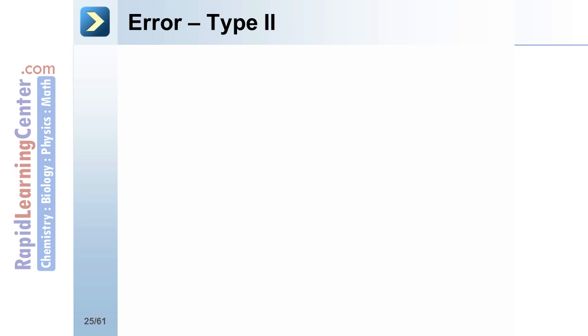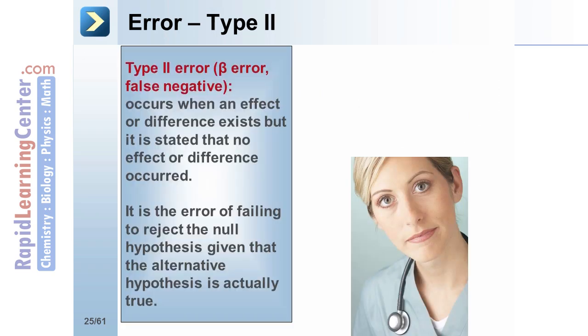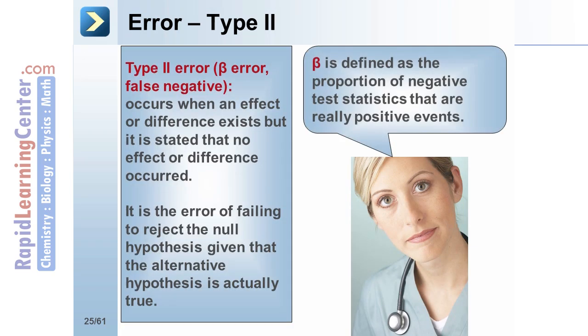Type 2 error, also known as a beta error or a false negative, occurs when an effect or difference exists but it is stated that there is no effect or difference. It is the error of failing to reject the null hypothesis given that the alternative hypothesis is actually true. Beta is defined as the proportion of negative test statistics that are really positive events.